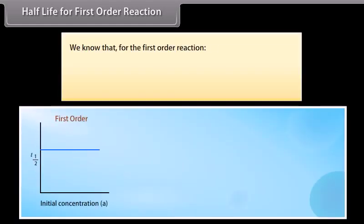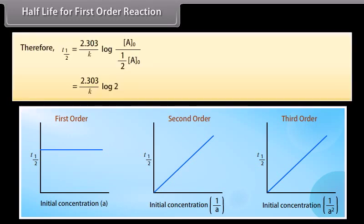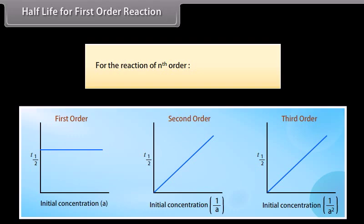For the half-life of a first-order reaction, we know K = (2.303/T) log(A₀/A), so T = (2.303/K) log(A₀/A). At T-half, A = A₀/2. Therefore, T-half = (2.303/K) log 2, which can be written as T-half = 0.693/K. Hence, the half-life period for a first-order reaction does not depend upon the initial concentration of the reactants. For a reaction of Nth order, T-half is inversely proportional to A₀^(N-1).